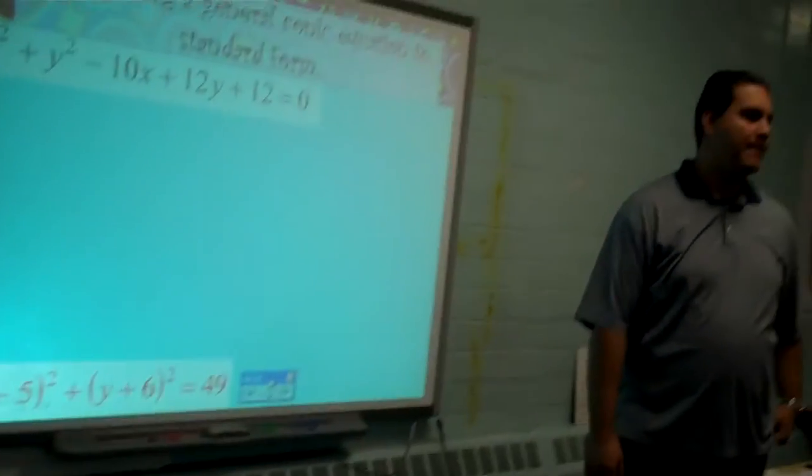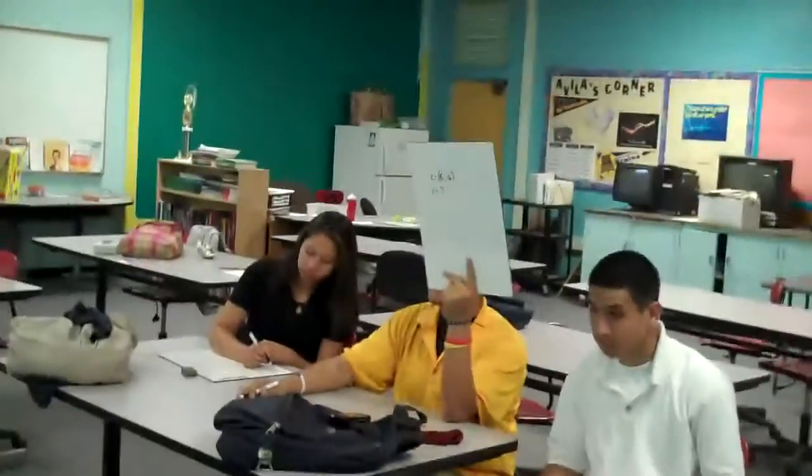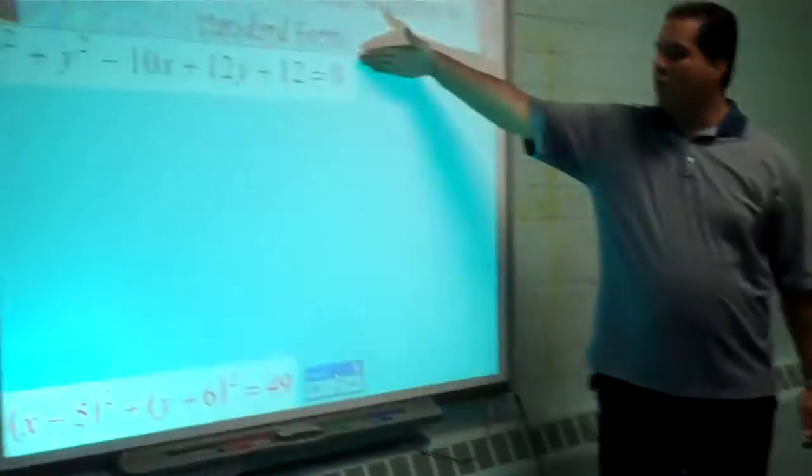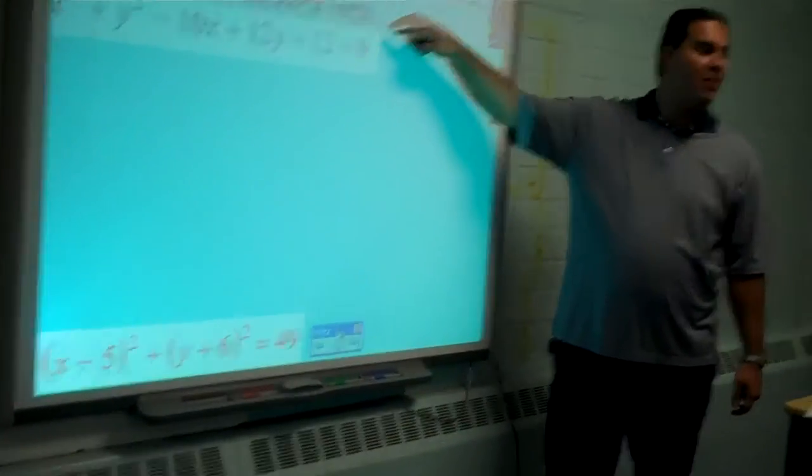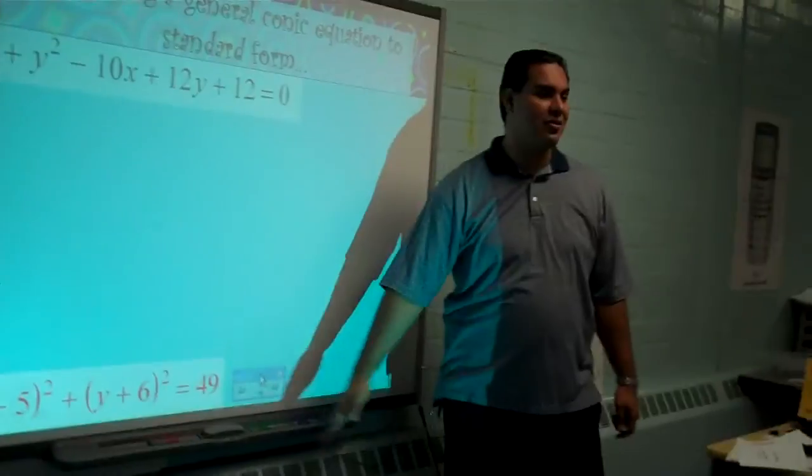Let's see some answers here. The center should be at 5, negative 6. That is correct. And the radius is 7. But this equation and this equation are actually equivalent. Meaning, somehow I can convert this equation to look like this.